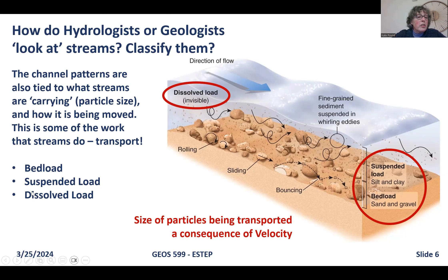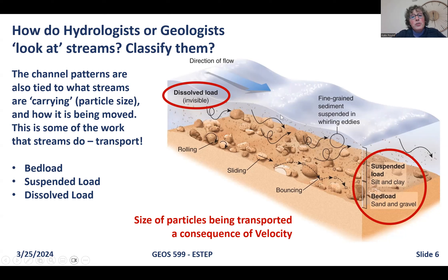Suspended load consists of very fine-grained sediment that is suspended in the water as it moves — muds and clays. If the water is going fast enough, it can carry them in suspension. In the diagram, all those little wiggling arrows capture the turbulence, and the pale brown flecks represent the fine-grained sediment suspended in the water. The suspended load is usually silts and clays.